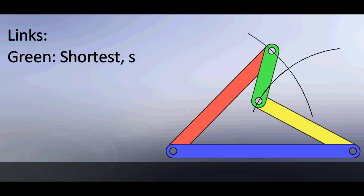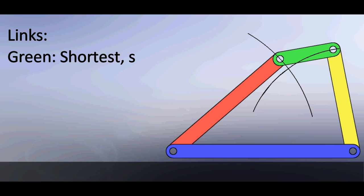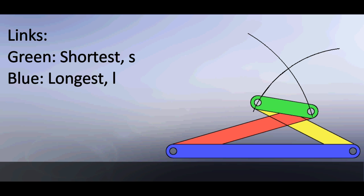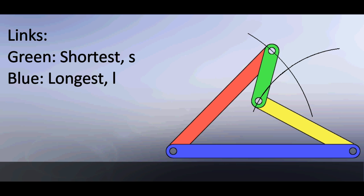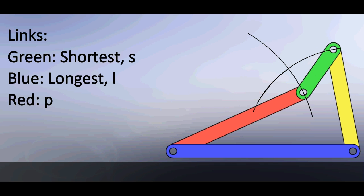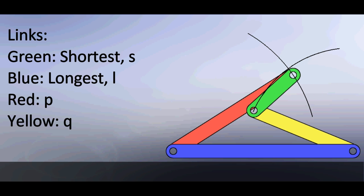Links: Green link is the shortest. Let's name it by letter S. Blue link is the longest. Let's name it by letter L. Let's call red link by letter P. Let's call yellow link by letter Q.